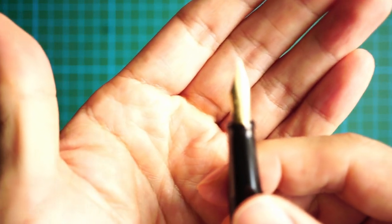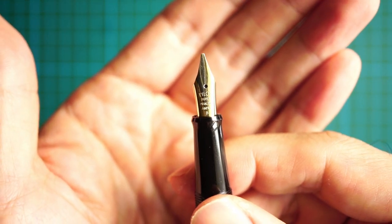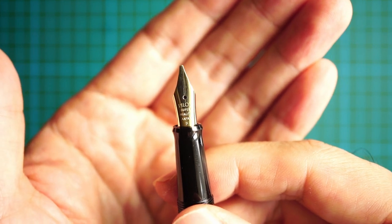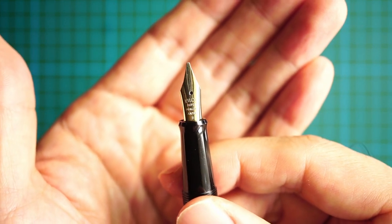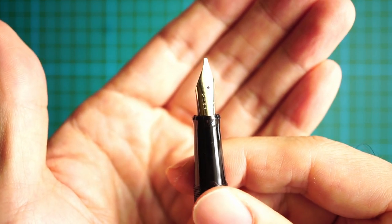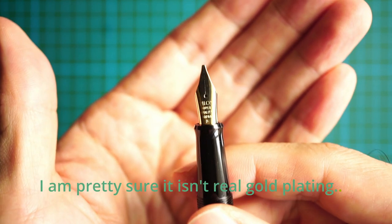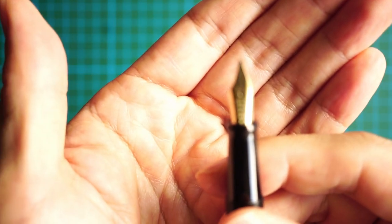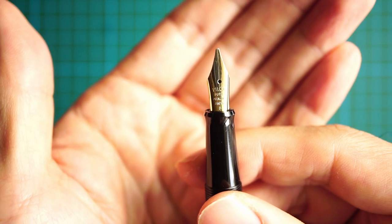Then you get to the nib. I probably didn't mention this just now compared to the Metropolitan—that one is a chrome or silver plated nib. This one is obviously gold plated. And it says there, Pilot Super Quality Japan and B for Broad.